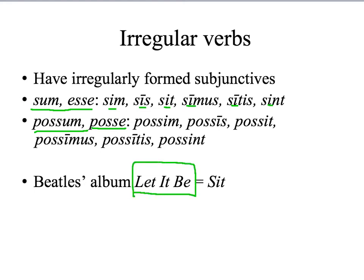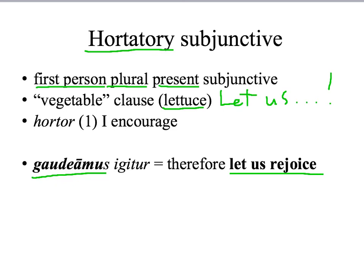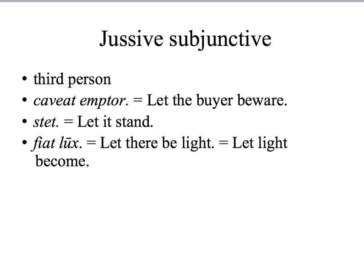If you remember the old Beatles album Let It Be, you can now express that using the present subjunctive: sit. Here are some uses of the subjunctive as a main verb. Hortatory subjunctive: first person plural, present subjunctive. We sometimes call this the vegetable clause because 'let us' sounds like 'lettuce.' The word hortatory comes from the Latin verb hortor, which means I encourage. So when you say let's do something, you're encouraging people to go along with you. Gaudeamus igitur — therefore, let us rejoice — are the opening words to an old student song. A second main verb subjunctive is called the jussive, usually found in the third person singular or plural. A famous jussive subjunctive is caveat emptor — let the buyer beware.